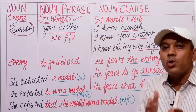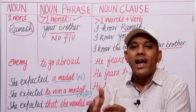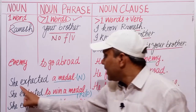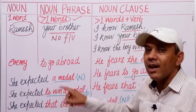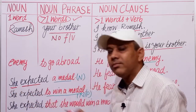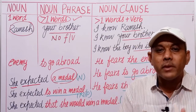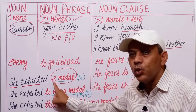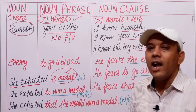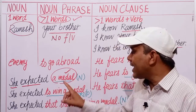Let us learn to extend from a noun, a noun phrase, and then to a noun clause in a sentence. For example: 'She expected a medal.' In this sentence, 'she' is the subject, 'expected' is the verb, and 'a medal' is the noun. As you know, articles are used before nouns, so 'medal' is a noun — a single word used as a noun.